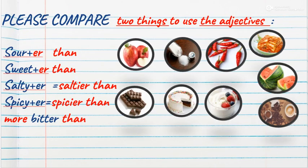Okay, please compare two things using adjectives. For example: sour — sourer than; sweet — sweeter than; salty — saltier than; spicy — spicier than; bitter — more bitter than.